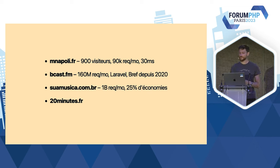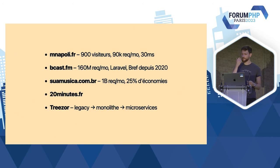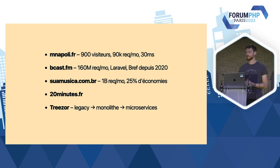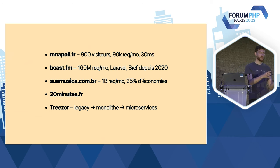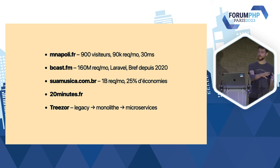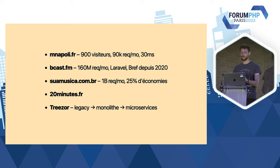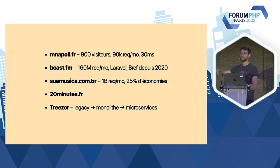Un dernier exemple que je voulais mentionner — moins sur le trafic mais plus sur les cas d'utilisation — Trisor, c'est une banque à ce service. On a d'ailleurs l'équipe qui est dans la salle. Une banque qui tourne avec Bref sur Lambda — vous l'utilisez peut-être si vous faites des paiements avec des cartes ticket resto, si vous utilisez du Shine, Swile, Lydia. Ils avaient un monolithe PHP Legacy qui tournait sur des serveurs, avec besoin de scaler plus, besoin de redondance, d'une infrastructure un peu moderne. Ils ont pris ce monolithe PHP, une vingtaine de lignes modifiées, mis dans une Lambda et ça marche. Ensuite, ils ont commencé à exploser les différentes routes, certaines passées dans des microservices séparés, utilisant EventBridge, SQS et des choses un peu avancées.